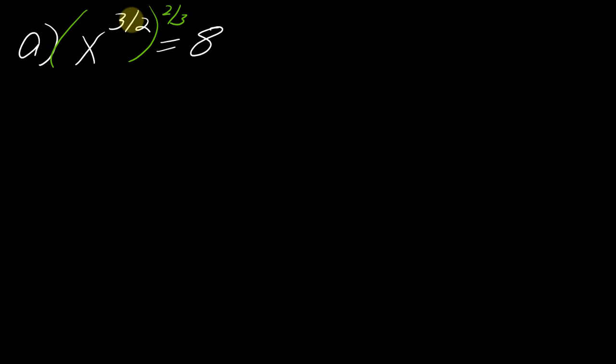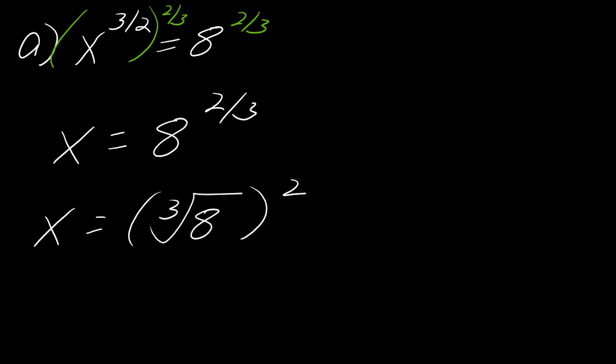So if I take this side to the 2 thirds, this 3 halves exponent will drop out. Whatever I do to one side, I have to do to the other side. So I have x just equals 8 to the 2 thirds. And then you just have to remember what the rational exponent means. So I take the cube root of 8 and I square it. That's what that's asking me to do. So this becomes 2 squared. So my answer in this case would be x equals 4.